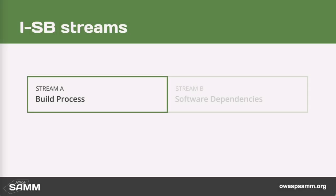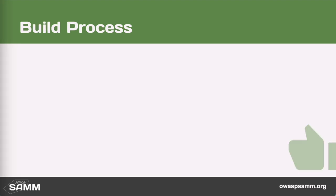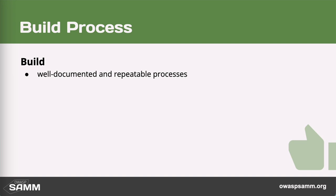What does 'build securely' mean? Let's jump into the first stream of this security practice and discuss that. The goal for this stream is that build processes are well documented somewhere like a wiki page. This includes capturing what the build process is, why it exists, why the steps are performed in this sequence, and what the dependencies between steps are — especially necessary when you have a very complicated process to build the software.